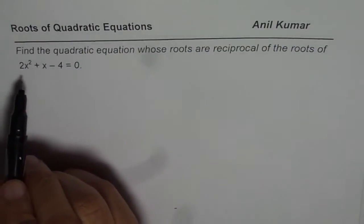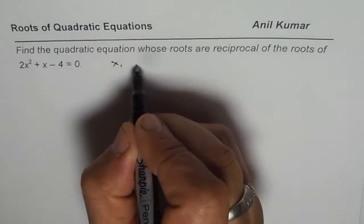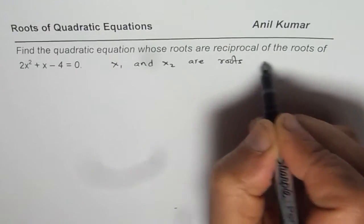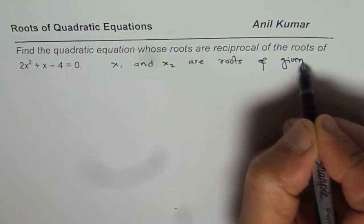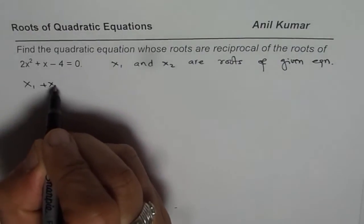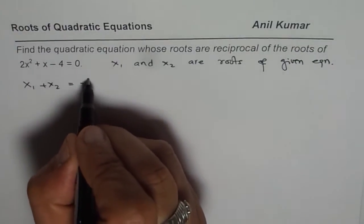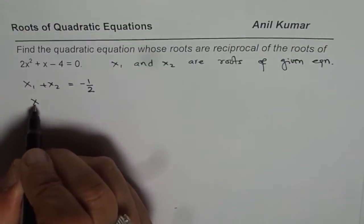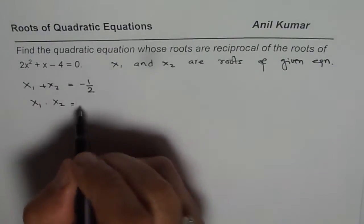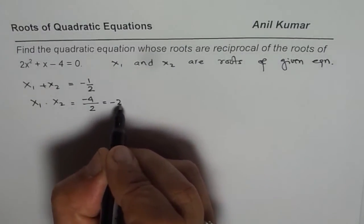From the given equation, we can find the sum and product of roots. Let us say that x1 and x2 are roots of the given equation. In that case, the sum of these roots, x1 plus x2, equals negative 1 over 2. And the product of roots x1 times x2 equals c over a, that is, c is minus 4 over a, which is 2, giving us minus 2.